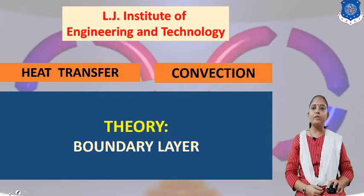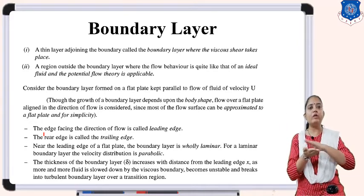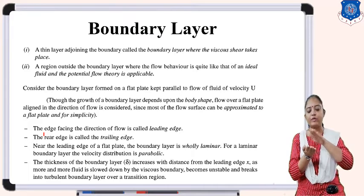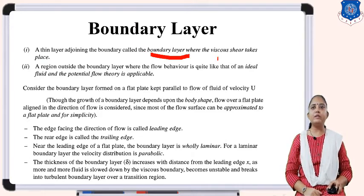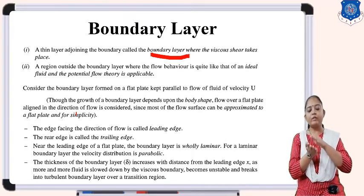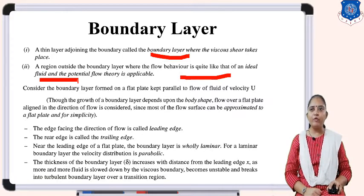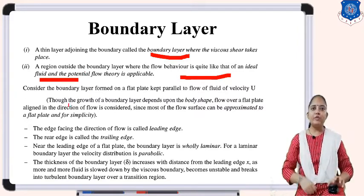The next important topic is the boundary layer. What is a boundary layer? A boundary layer is an adjoining layer attached to a plate surface — for example, when fluid flows over a flat plate surface, a layer attaches to the surface, and this is called the boundary layer. A thin layer adjoining the boundary is called the boundary layer where viscous shear stresses are acting between the fluid and the boundary. The region outside the boundary layer behaves like an ideal or potential fluid.